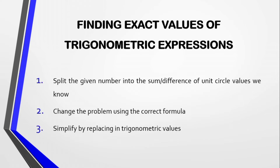There are steps to finding the exact values of a trigonometric expression. First, split the given number into the sum or difference of unit circle values we know. Second, change the problem using the correct formula. Then third, simplify by replacing in trigonometric values.